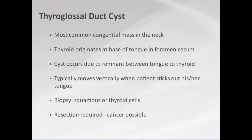Thyroglossal duct cysts are the most common congenital mass in the neck. The thyroid gland in the embryo starts at the base of the tongue and climbs down into its spot at the bottom of the neck. There can often be a remnant duct or strip of tissue that goes from the base of the tongue right down to the gland, and the cyst occurs somewhere along that tract of tissue.